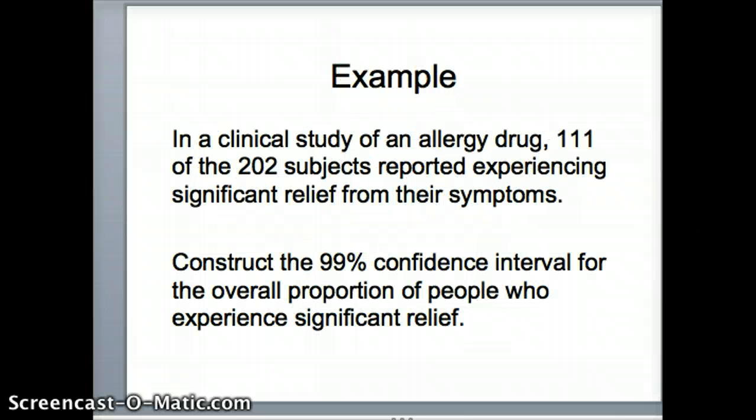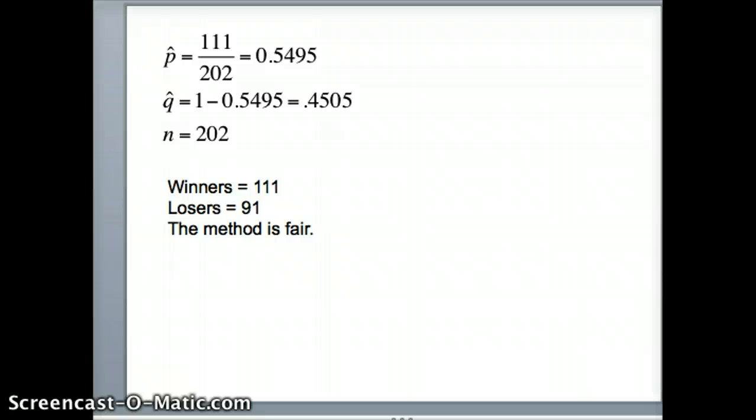In a clinical study of an allergy drug, 111 of 202 subjects reported experiencing significant relief from their symptoms. We want to construct a 99% confidence interval for the overall proportion of people who experience significant relief. Our p-hat is 111 out of 202. We have 111 winners, so the number of winners is good. The number of losers is 202 minus 111, also very high, so 91 losers. That's certainly enough for us to use this method. Our proportion is 111 out of 202, which is 0.5495. The probability of losing is 1 minus 0.5495, which is 0.4505. And n is 202.